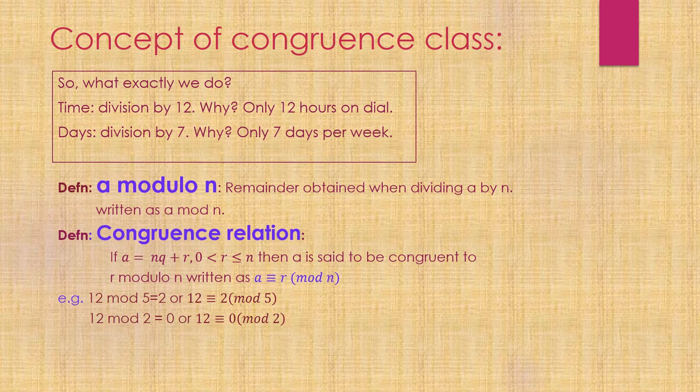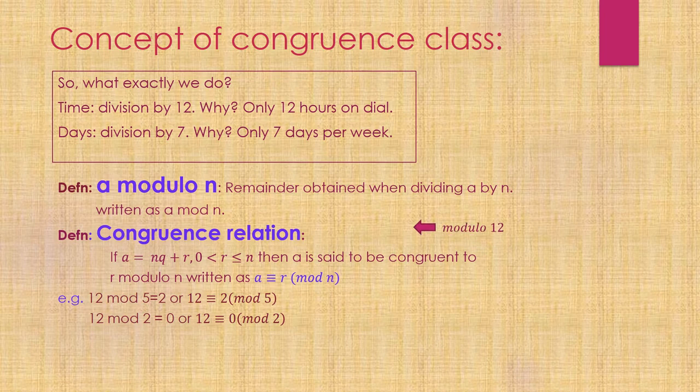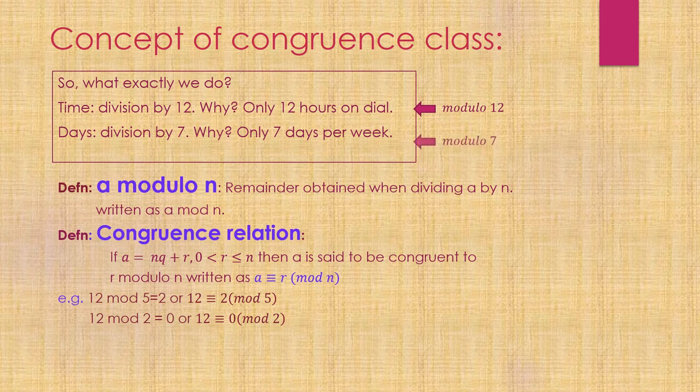If the number is divisible, that is 12 modulo 2 is 0, then I can write 12 is congruent to 0 modulo 2. This way, for time we use modulo 12, and for days we use modulo 7.